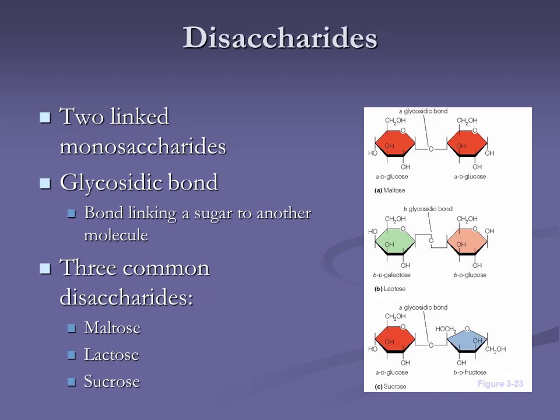Our most common disaccharides are maltose, lactose, and sucrose. We're probably most familiar with lactose — especially if you're lactose intolerant. Lactose comes from milk and dairy products. Sucrose is our favorite: table sugar, made from glucose and fructose. Lactose is glucose and another monosaccharide called galactose.